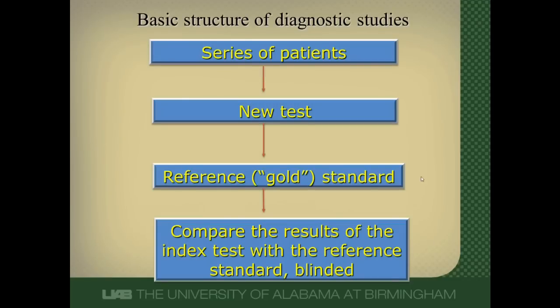So how are diagnostic test studies set up? First off, we get a sample of patients who have symptoms of a disease that we're interested in. We apply our new test that we're studying to them. We apply a reference or gold standard to them. And then we compare the results of the new test with the reference standard in a blinded fashion.